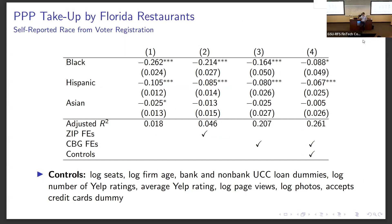The first table reports results using self-reported race. In the first column, black-owned firms are 26.2 percentage points less likely to get a PPP loan compared to white-owned firms. Columns 2 and 3 add zip and census block group fixed effects. Column 4 adds all controls: restaurant size, age, whether it has existing bank relationships, etc. Location and firm characteristics explain about two-thirds of the total disparity for blacks, but even when we look within a CBG at observably comparable black and white-owned restaurants, black-owned restaurants have significantly lower PPP take-up.